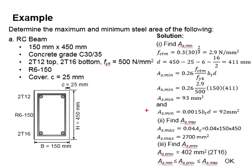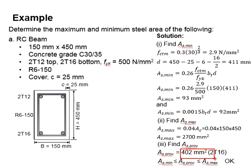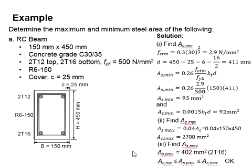Next, you need to find AS provided. For 2T16, you use the circular area equation π·r² × 2, giving 402 mm². AS provided is found to be in between AS maximum and AS minimum. Therefore, the maximum and minimum steel area is considered acceptable.